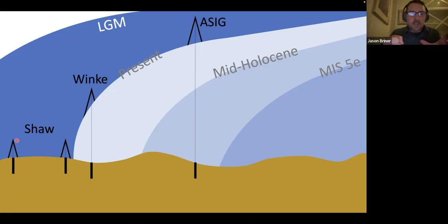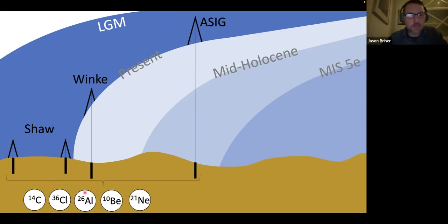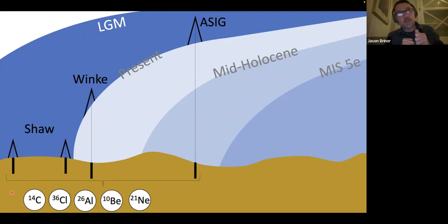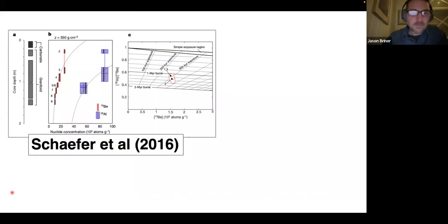In those rock cores we want to measure a whole family of cosmogenic nuclides: radiocarbon (¹⁴C), chlorine-36, aluminum-26, beryllium-10, and neon-21. Other than neon, the rest are radioactive, and each of the four radioactive isotopes has a different half-life. If you have isotope systematics with two isotopes of different half-lives, you can use them as burial clocks — the concentrations deviate as a function of burial time.